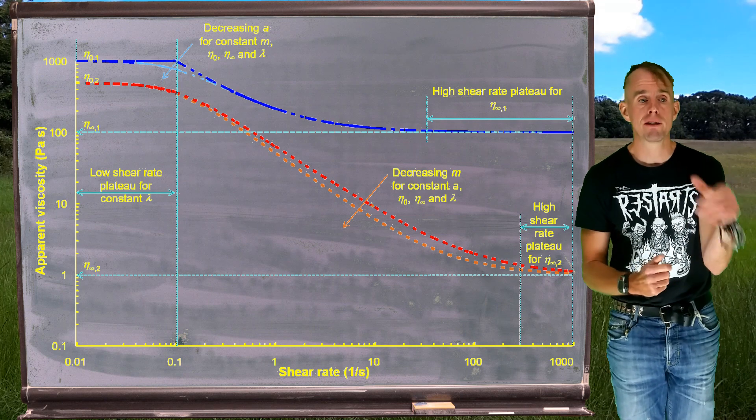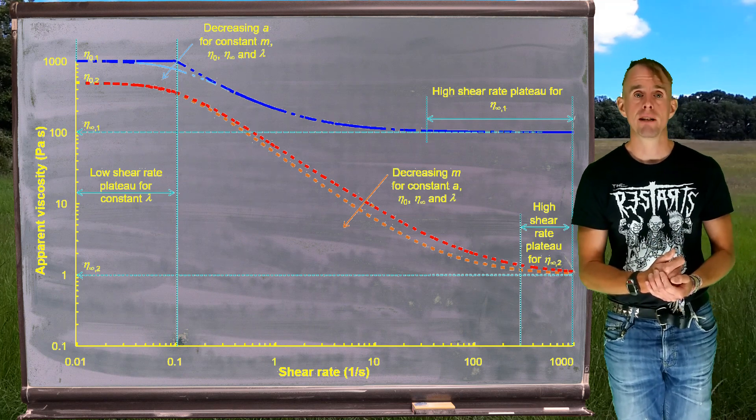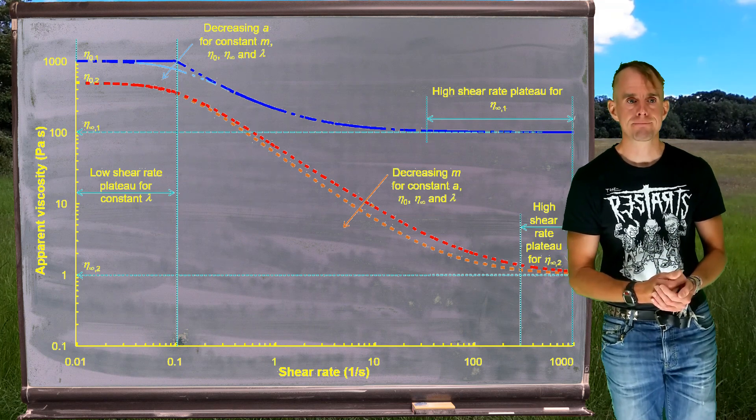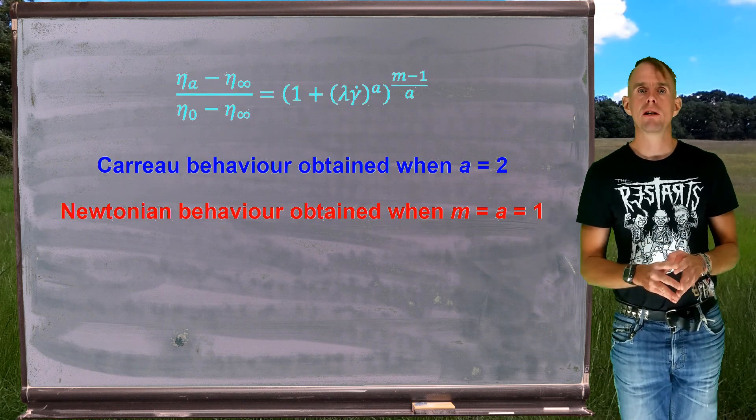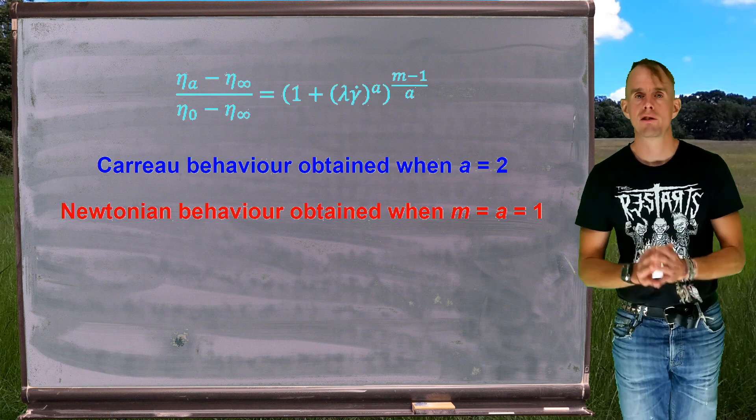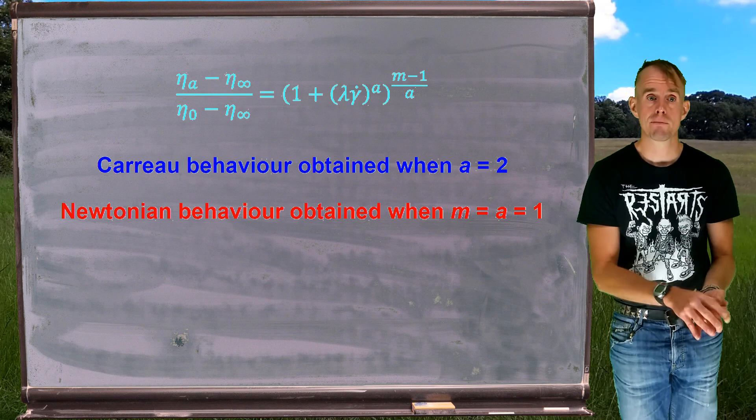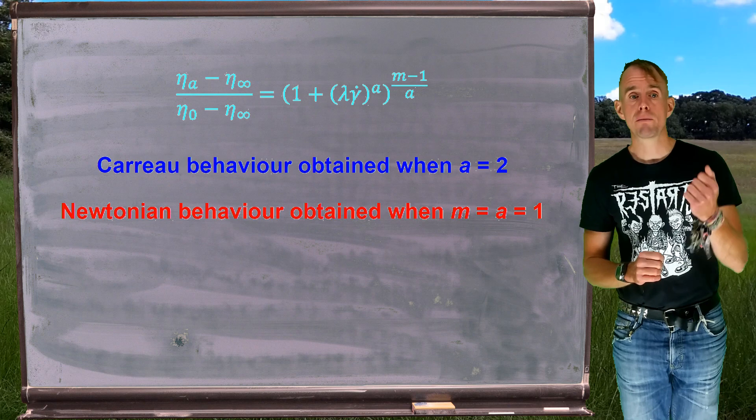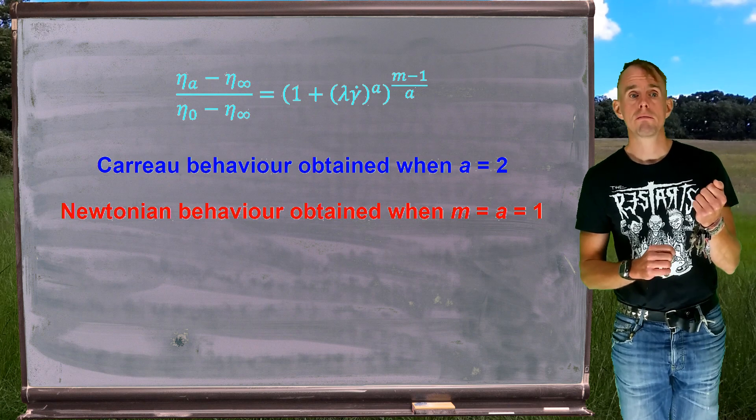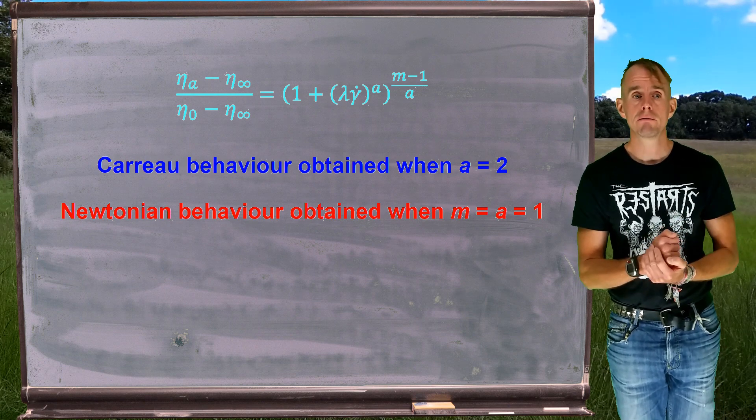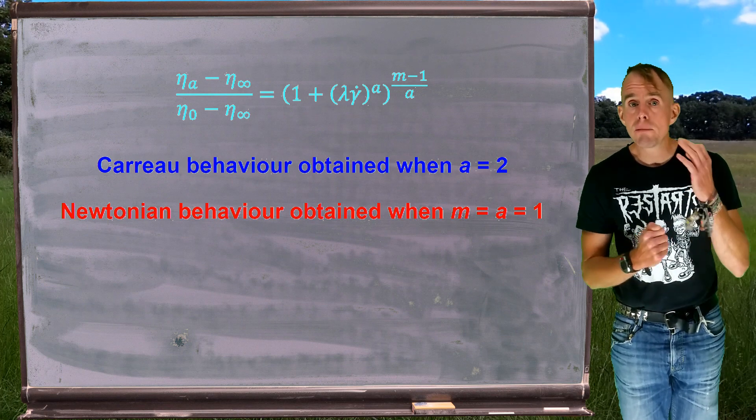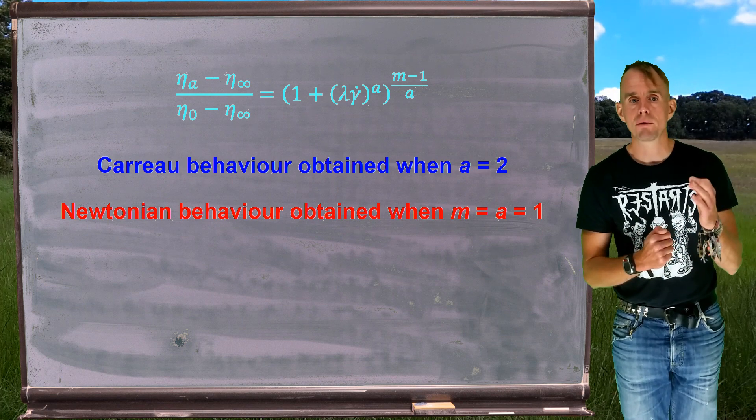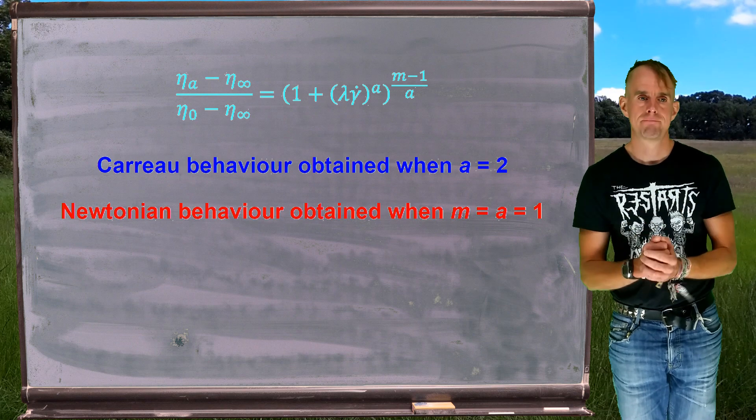And so there we have how a Carreau-Yasuda fluid makes its prediction of apparent viscosity. And again, this is very, very fittable against real experimental data. So let's think once more how we can manipulate the behaviour of the Carreau-Yasuda fluid to other constitutive models. And we can see if we put a equals to two and eta infinity to zero, we get Carreau behaviour back. We get Newtonian behaviour when m equals a equals one.